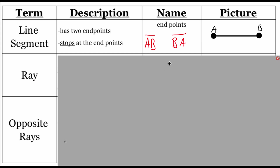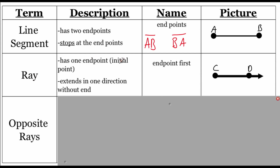Our next vocabulary word is a ray. A ray has one endpoint, which we call the initial point, but then extends out in one direction without end. Looking at the picture, C is the endpoint or initial point, and the ray extends through point D and keeps going, with an arrowhead to show that. When naming a ray, we start with the endpoint — so order is very important. We would name this ray CD, shown with a ray symbol over top: no arrowhead on the left, but an arrowhead on the right.